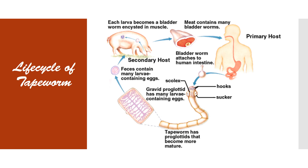The onchospheres soon transform into the next stage called bladder worms. These bladder worms travel through the blood circulation of the pig and get scattered in the muscles of this host. This pig is now called infected with bladder worms and its meat is called measly pork. If a human consumes this infected measly pork, the bladder worms reach the small intestine of the primary host, where they undergo developmental stages to become adults. In this way, the tapeworm completes its life cycle in two hosts.